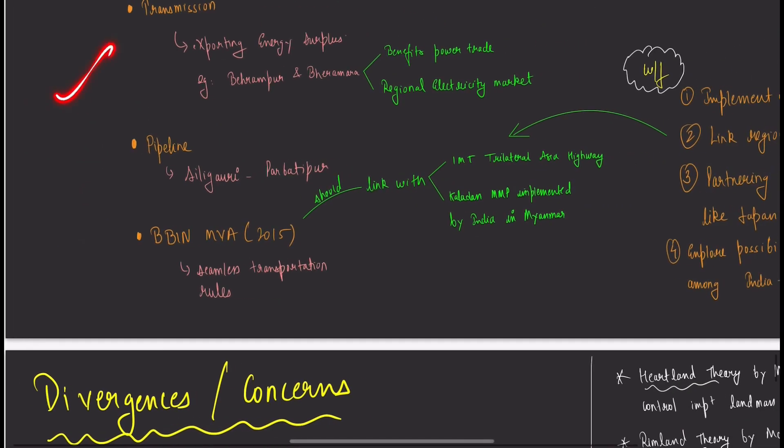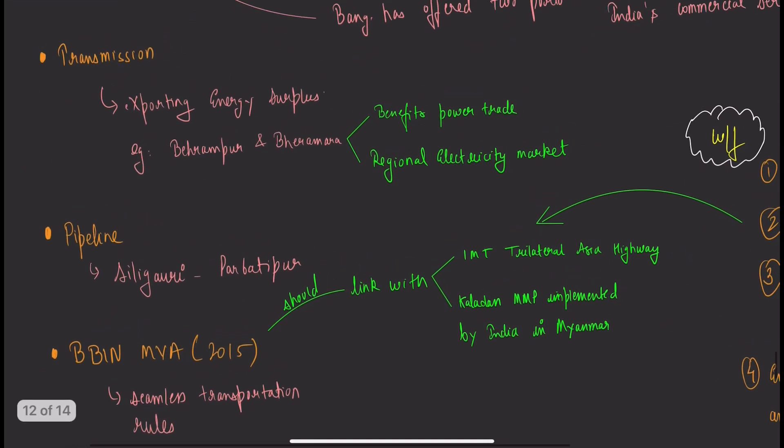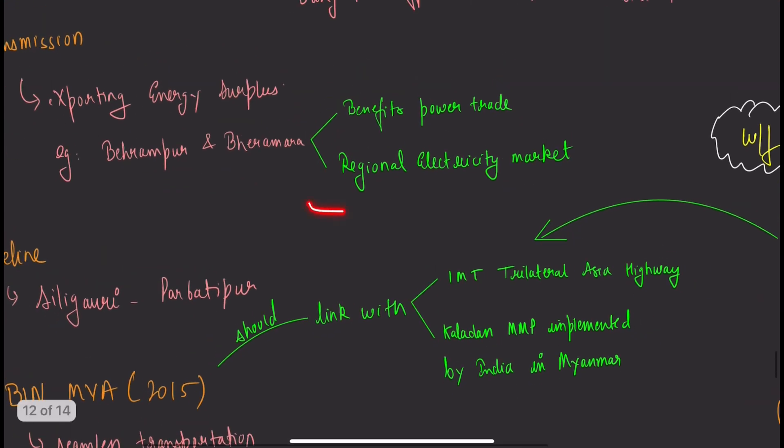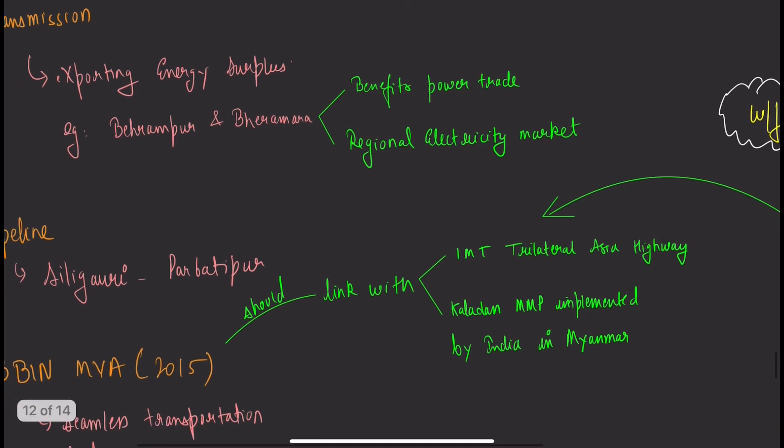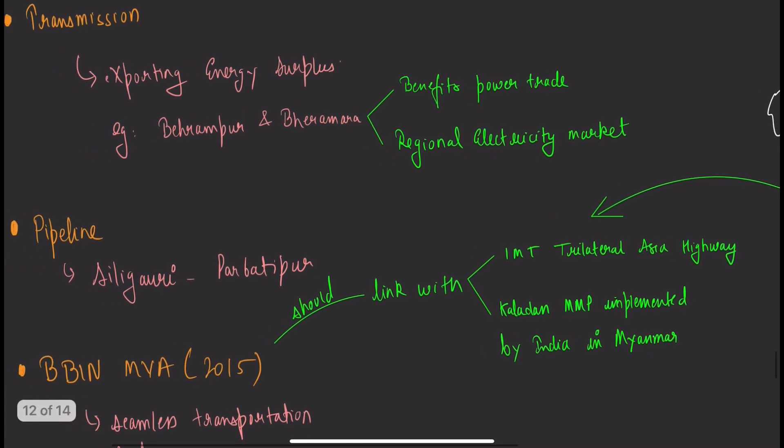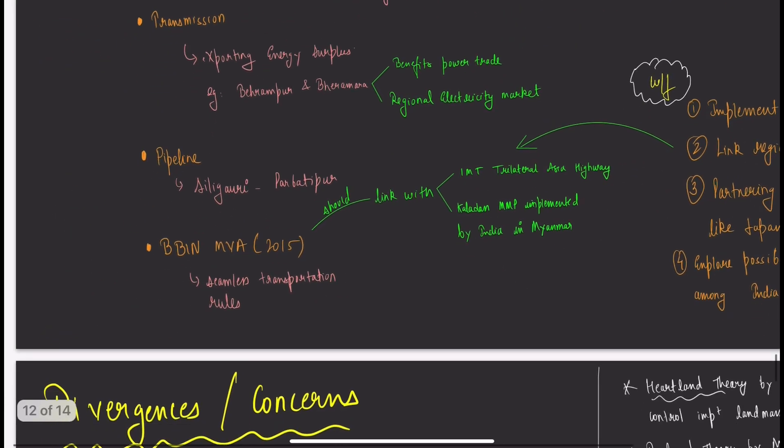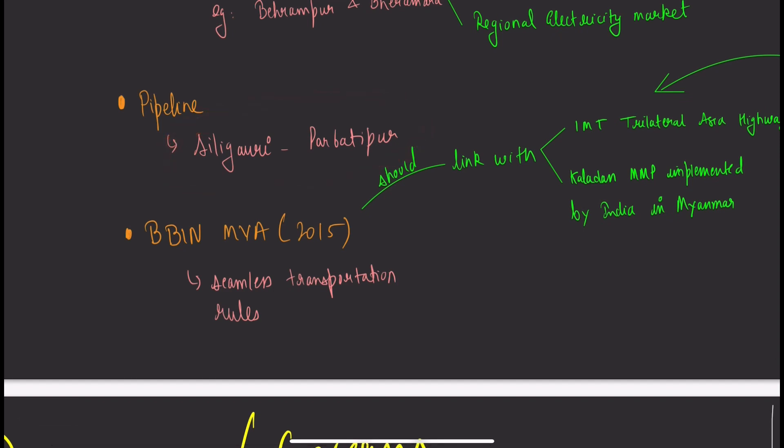Transmission is about electricity. Like we help Bhutan develop multi-hydro electric projects and allow them to export electricity to India—a win-win situation. Similarly with Bangladesh, like Bherampur-Bheramara transmission line. This will benefit making a regional electricity market in SAARC or BIMSTEC area with integrated grid. There's also Siliguri-Parbatipur pipeline agreement.